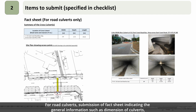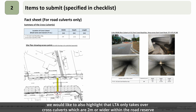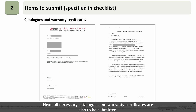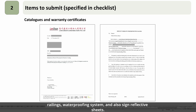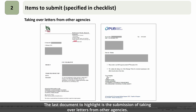For road culverts, a fact sheet indicating general information such as the dimension of culverts, access points to enter the culverts, and photos of the general view are required. LTA only takes over cross-culverts which are 2 metres wide or wider within the road reserve. All necessary catalogues and warranty certificates are also to be submitted, including items such as protective coating, bearings, movement joints, railings, waterproofing system, and sign reflecting sheets. The last document to highlight is the taking over letters from other agencies, such as from NPARKS for maintenance of greenery, PUB for drainage works, and NEA/DBC for cleanliness.